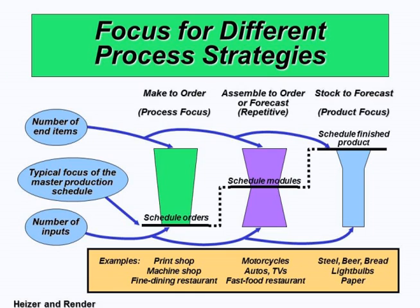At the other extreme is make-to-stock, or product-focused — also called stock-to-forecast. Examples include beer, light bulbs, bread, and steel, where the number of inputs are relatively small, the commonality of products is very high, and the variety is not nearly as large as in a print shop. These are more standardized products, as compared to the customized products in make-to-order. In make-to-stock, you produce and hold inventory; that is the difference between these two extremes.